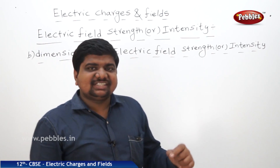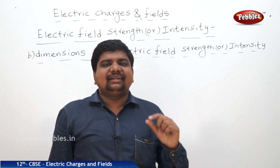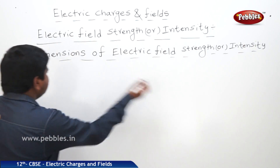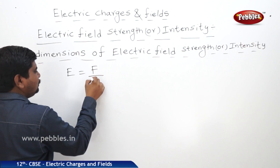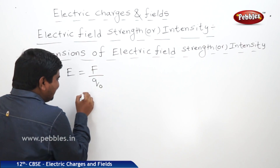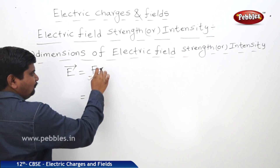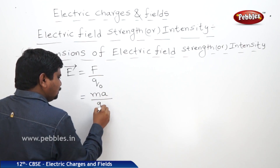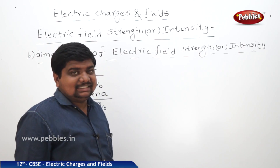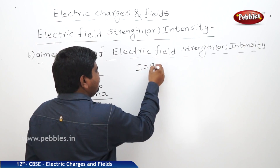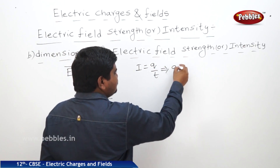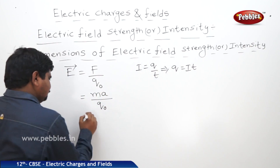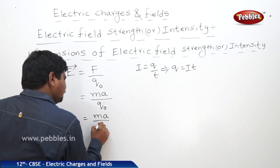After the explanation, we are going to discuss about the dimensional formula of electric field strength or intensity. Before writing the dimensional formula, you should know the original formula: E = F / q₀. Force can be written as Ma or Mg divided by q₀. According to the definition of electric current, I = q / t, so we can write q = I·t. Applying this, we get E = Ma / (I·t).